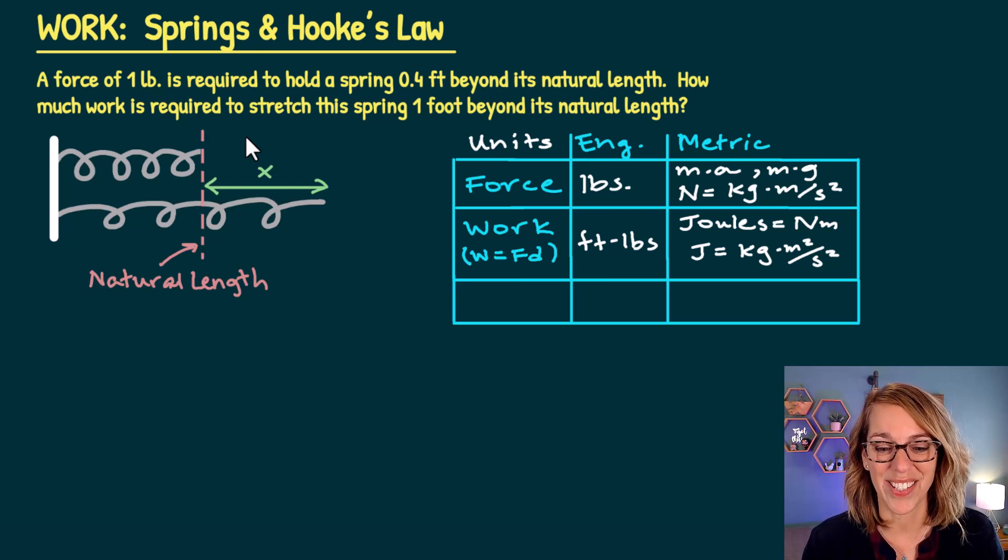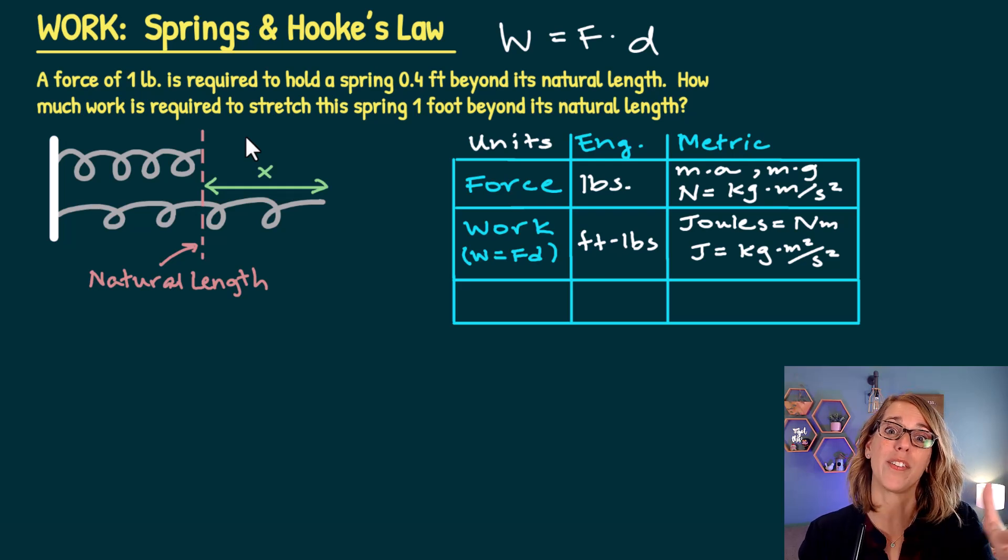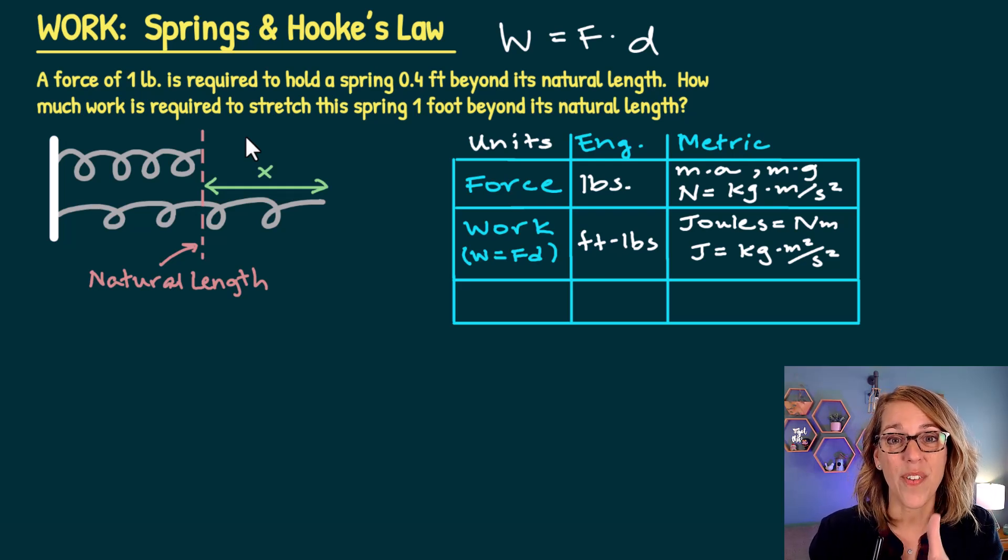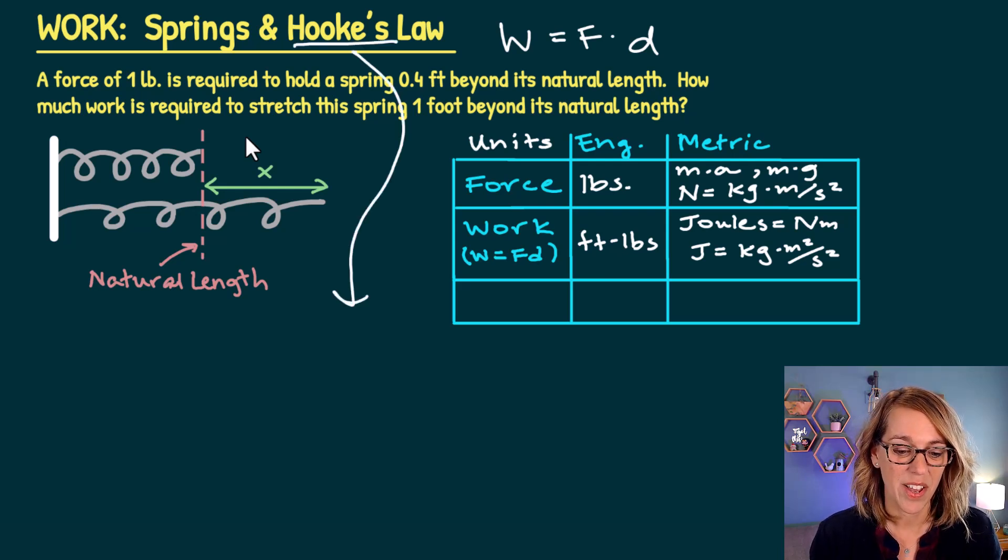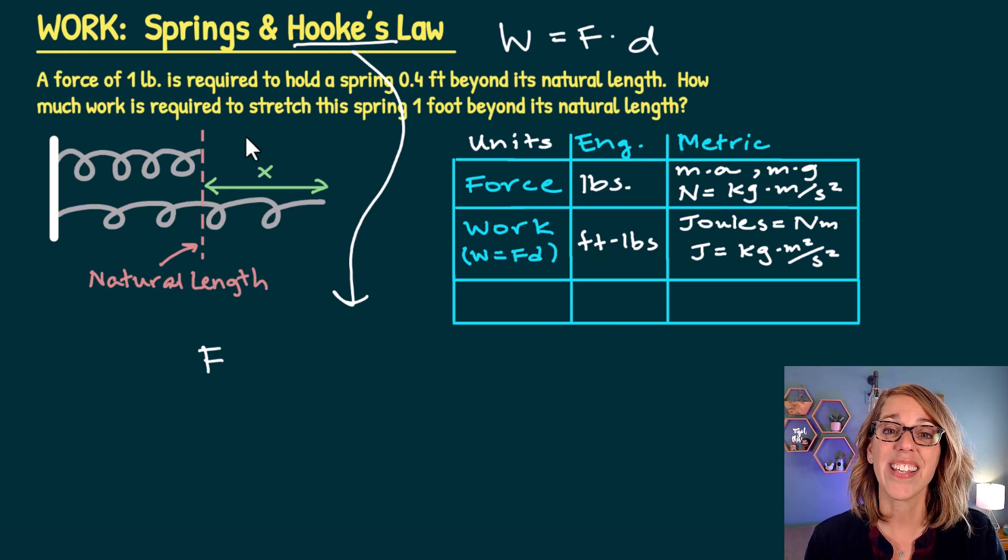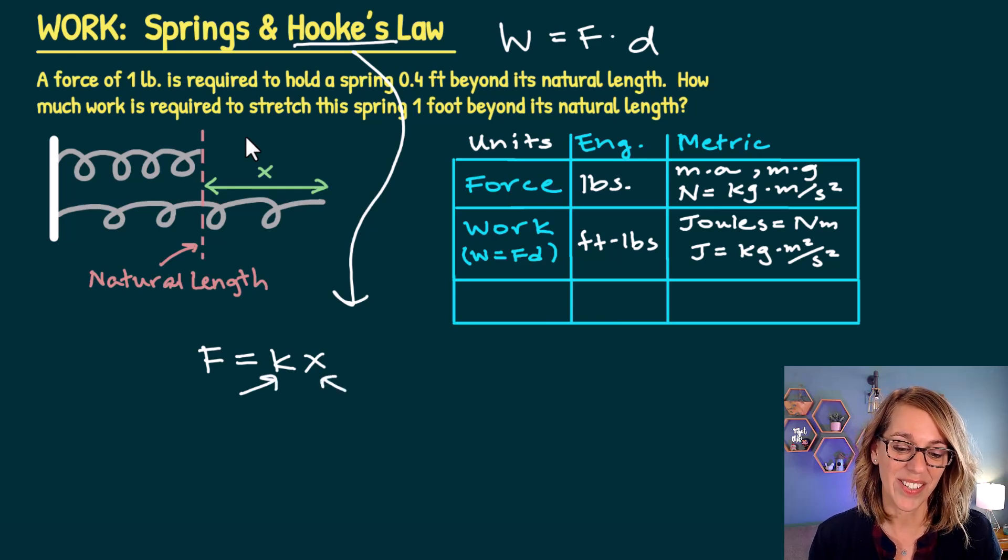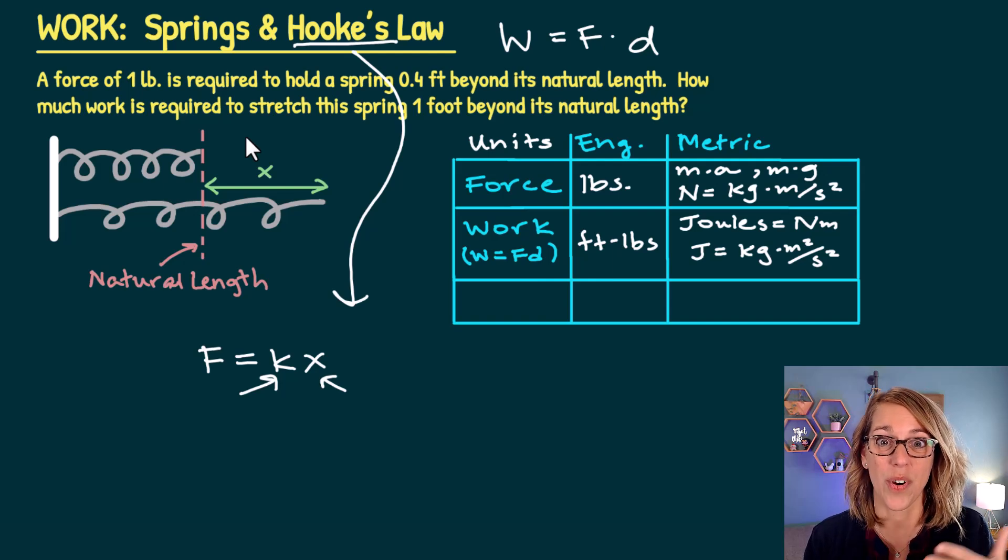Let's talk about work and springs. Work is equal to force times distance. For the spring, the distance is going to be how far we've either stretched or compressed that spring from its natural length, which you could also call equilibrium. Force is going to be based on Hooke's Law. My force based on Hooke's Law says that the force is directly proportional, so equals some k times the length that we have either stretched or compressed our spring by.